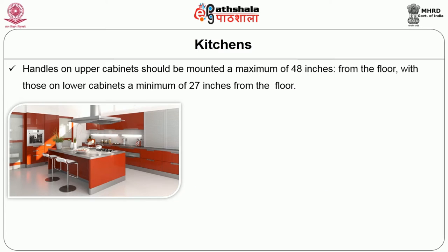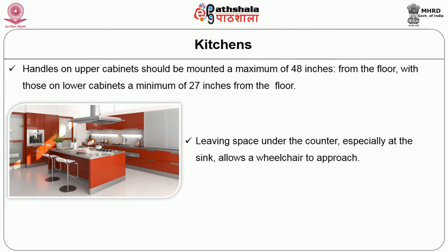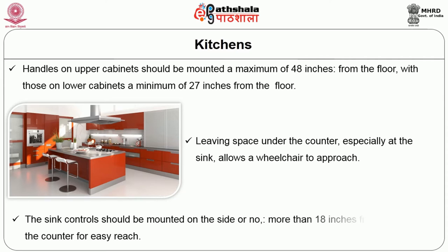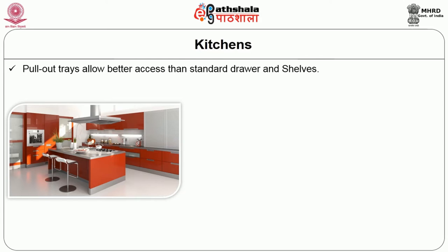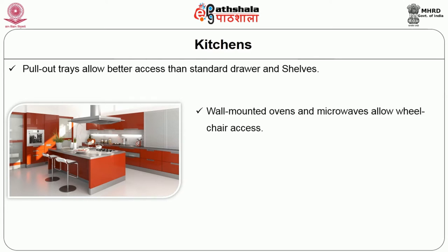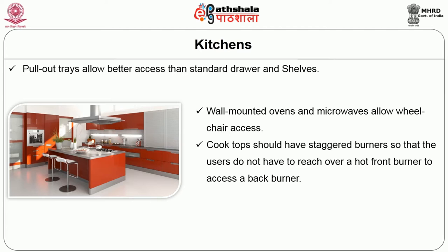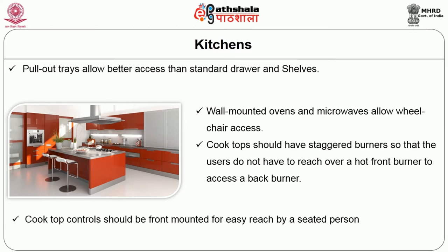Handles on upper cabinets should be mounted at a maximum height of 48 inches from the floor, with those on lower cabinets a minimum of 27 inches from the floor. Leaving space under the counter, especially at the sink, allows a wheelchair to approach. Sink controls should be mounted on the side or not more than 18 inches from the front of the counter for easy reach. Pull-out trays allow better access than standard drawers and shelves. Wall-mounted ovens and microwaves allow wheelchair access. Cook tops should have staggered burners so the user does not have to reach over a hot front burner to access a back burner, and controls should be front-mounted for easy reach by a seated person.